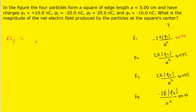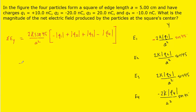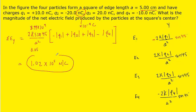For the y direction, we factor out 2k·sin(45°)/a². What remains is −|Q1| + |Q2| + |Q3| − |Q4|. Plugging in known values: k = 8.99×10⁹, the side length a = 5 cm = 0.05 m, and all charges in nanocoulombs converted by multiplying by 10⁻⁹ to get coulombs. After making those conversions and substituting, the result is approximately 1.02×10⁵ newtons per coulomb — the magnitude of the net electric field at the center of the square.